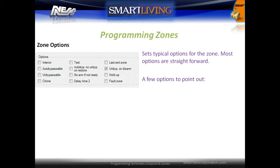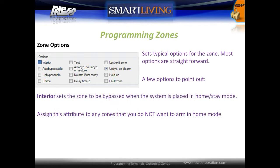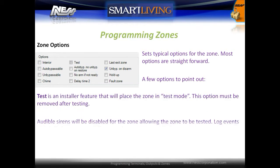The zone options set typical options for the zone. The interior option is used to set zones as interior zones, which will bypass these zones when the system is placed in stay mode — assign this to any zones you do not want armed in stay mode. The test option is an installer feature that places the zone in test mode and should be removed after testing. When a zone is in test mode, audible sirens will be disabled for the zone, but the zone will still log events and dial out to a monitoring station.